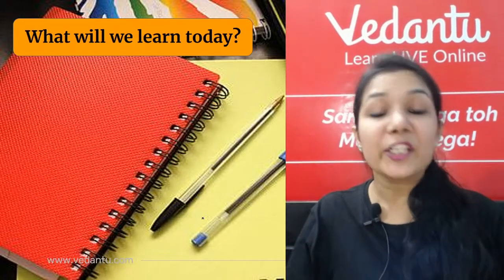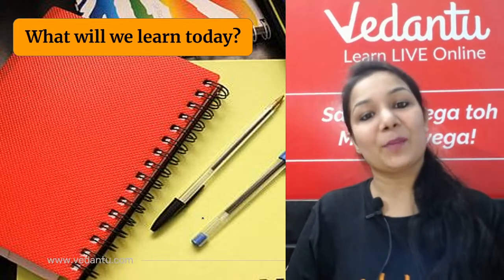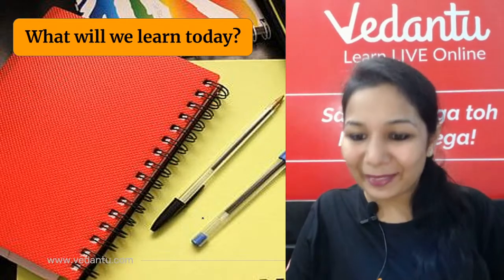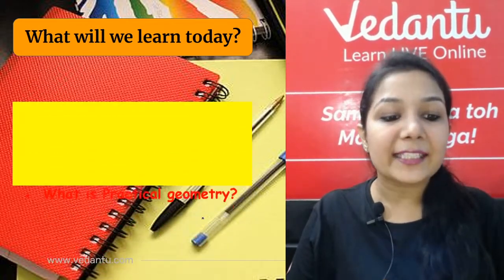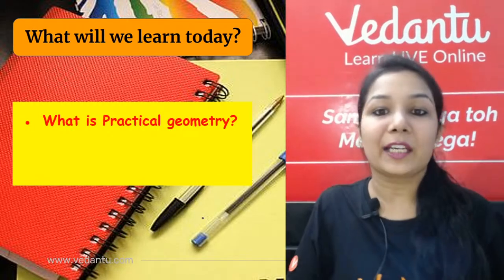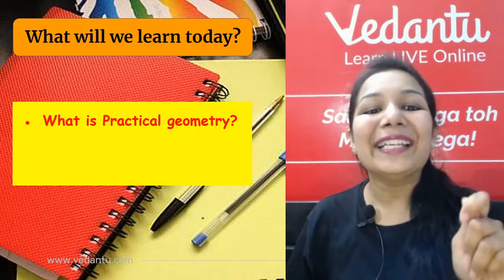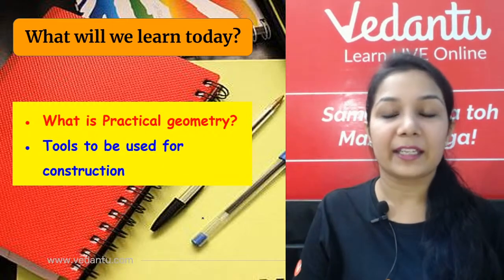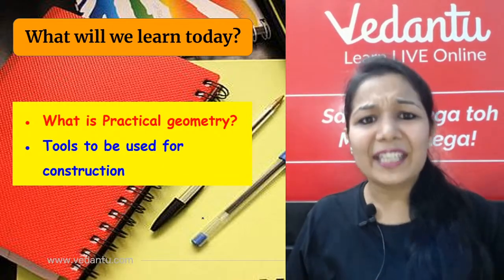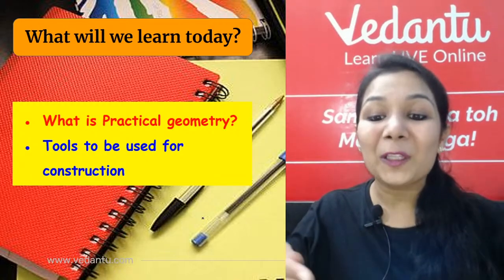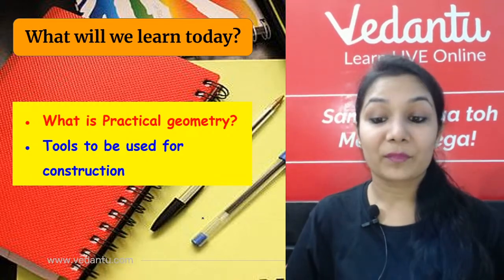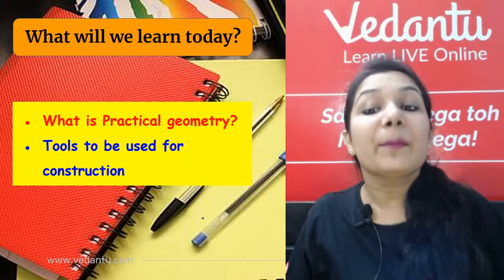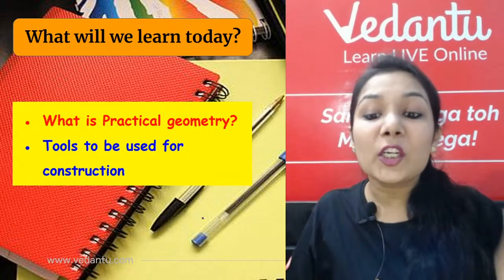Before we start this amazing chapter today — what is practical geometry and what are the tools used in practical geometry? Today we will see all the tools in our geometry box: compass, divider, ruler, set squares — all those which you have in your geometry box. All those who want to follow along today, keep your geometry box with you, along with a notebook and a pen, which I advise you in every class.